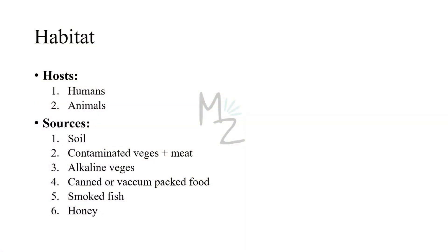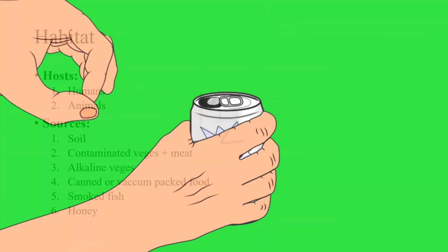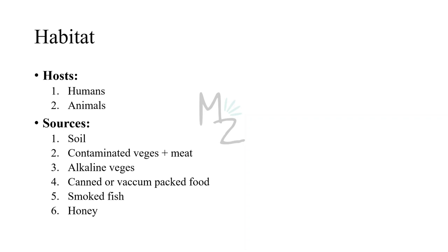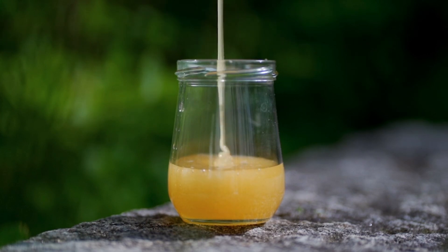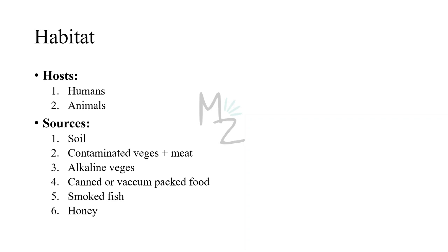Canned or vacuum-packed foods are also a source of infection. If sterilization is inadequate or the food is not properly cleansed before canning, spores may survive, germinate in the anaerobic alkaline environment, and lead to infection when consumed. Other sources include smoked fish and honey. When honey is packed, spores may be present inside the bottle; when an infant is given honey containing C. botulinum spores, it will cause infant botulism.